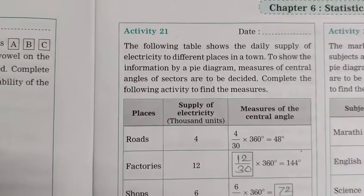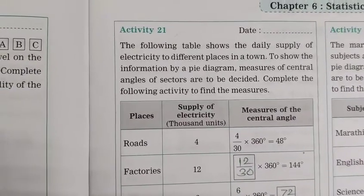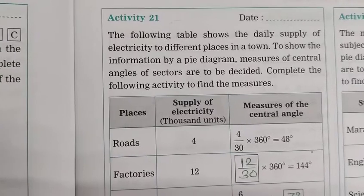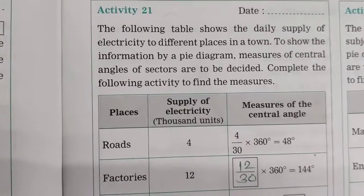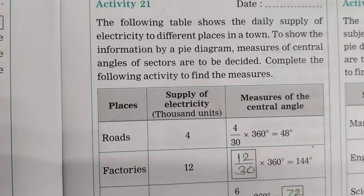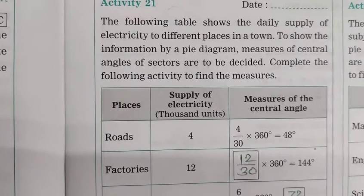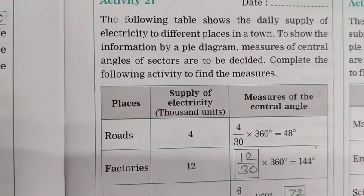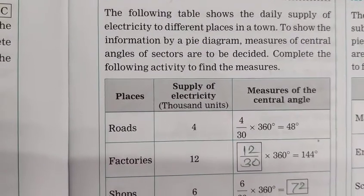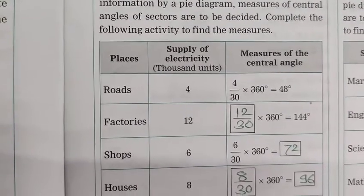Welcome dear student. Now in today's class we are going to see about Activity Math First, Activity number 21. The following table shows the daily supply of electricity to different places in a town. To show the information by a pie diagram, measures of the central angle of sectors are to be decided.